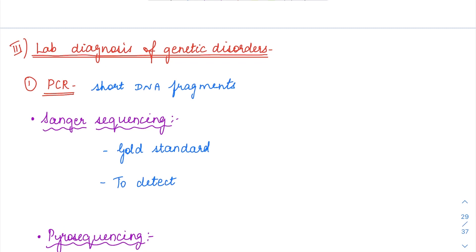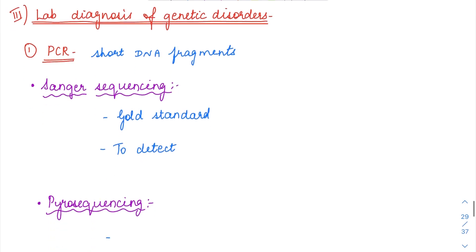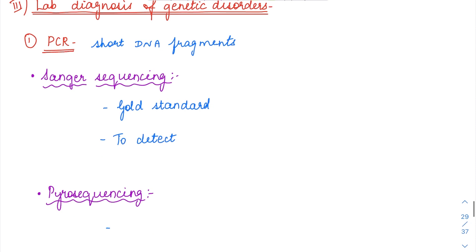So now we had seen about various Mendelian disorders, non-Mendelian disorders, then chromosomal disorders. The last one was the multifactorial inheritance, which I have already discussed the examples. So now let us see how to diagnose these genetic disorders.